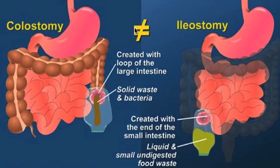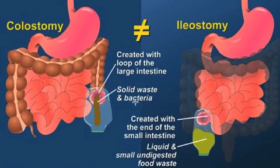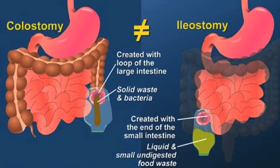Now let's go over the differences between an ileostomy and a colostomy. An ileostomy is constructed with the small intestines. A colostomy is constructed with the large intestines. An ileostomy produces output that is liquid to mushy consistency, similar to toothpaste. A colostomy produces output that is mushy to fully formed.